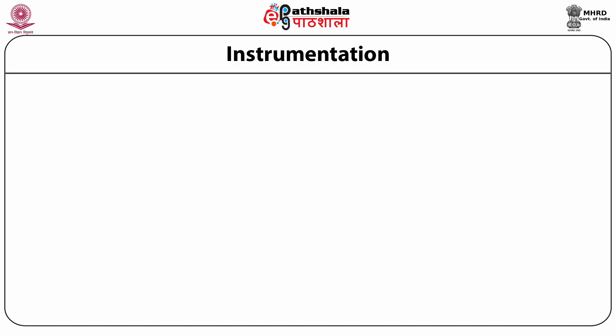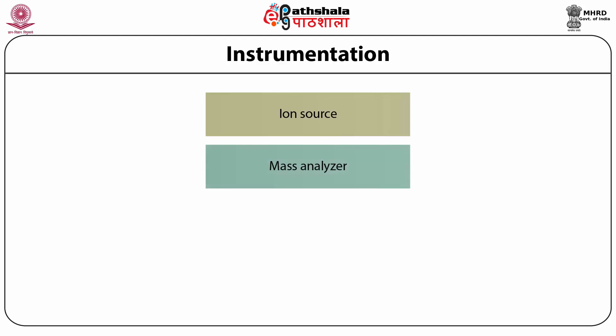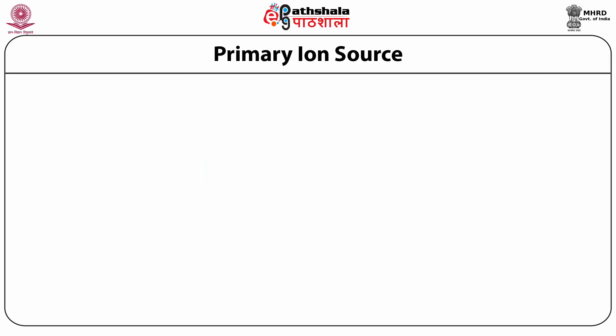In any form of spectroscopy, the most important part is instrumentation. When we look at the instrumentation for SIMS, there are three main components: the first is Ion Source, the second is Mass Analyzer, and the third is Detector.